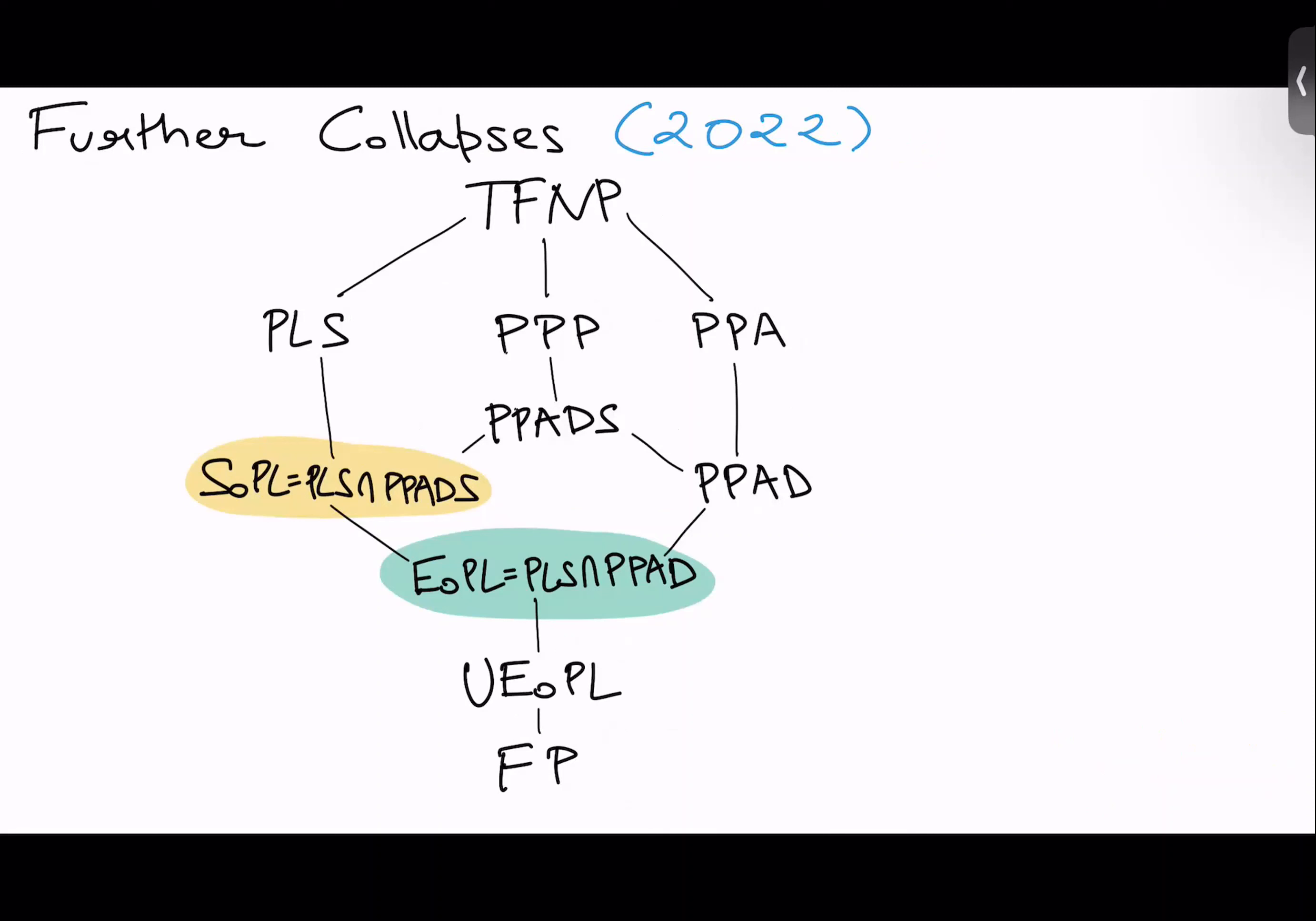This was quite surprising. People expected CLS to be strictly weaker than this intersection. And it's kind of interesting that the intersection of two complexity classes has a natural characterization, and in particular, a natural complete problem.